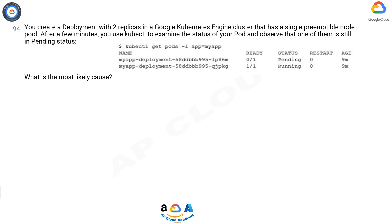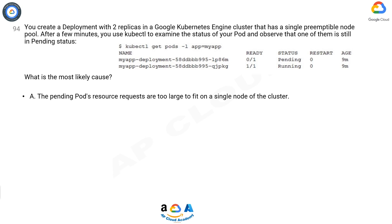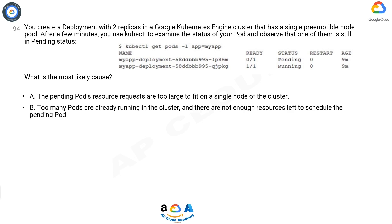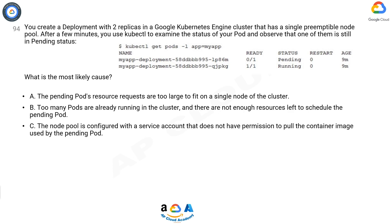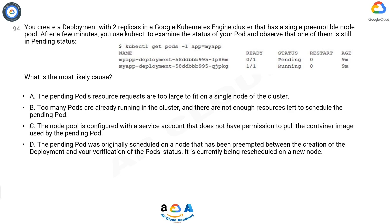You create a deployment with two replicas in a Google Kubernetes Engine cluster that has a single preemptible node pool. After a few minutes, you use kubectl to examine the status of your pods and observe that one of them is still in pending status. What is the most likely cause?